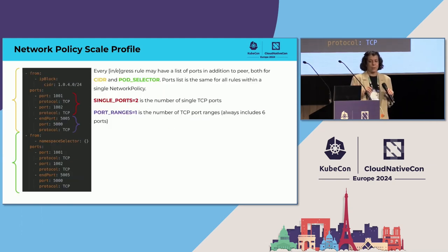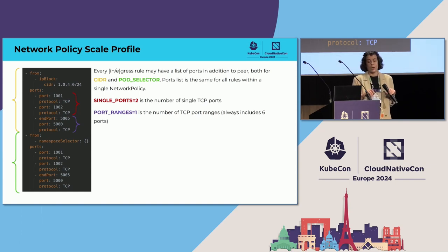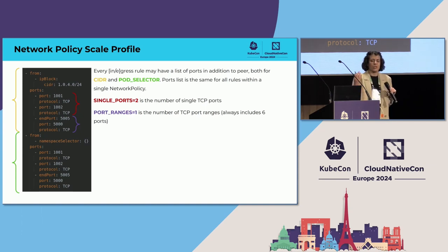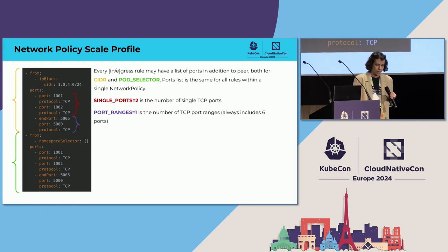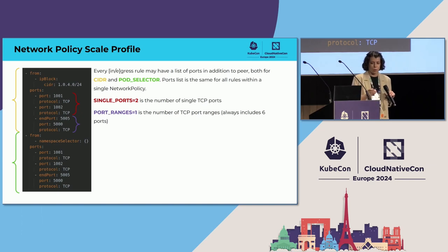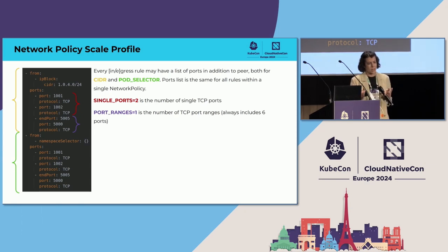There are a couple more parameters. There are also port specifications that may be attached to every rule in a network policy. There are two main types: a single port, which is just a number, and a port range, which specifies the beginning and end of the range. When you specify this parameter in the scale profile, it will generate a port config for both CIDR and pod-selector rules.